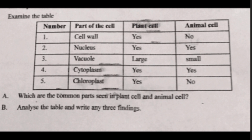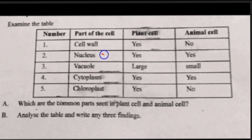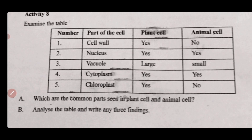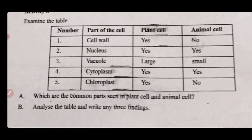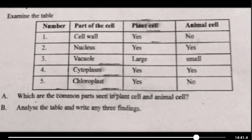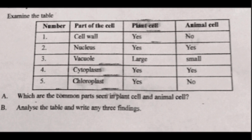First question: which are the common parts seen in both plant and animal cells? The answer is nucleus and cytoplasm — both are present in plant cells and animal cells. Second: analyze the table and write any three findings. Cell wall is present in plant cell but not in animal cell. Nucleus and cytoplasm are present in both.